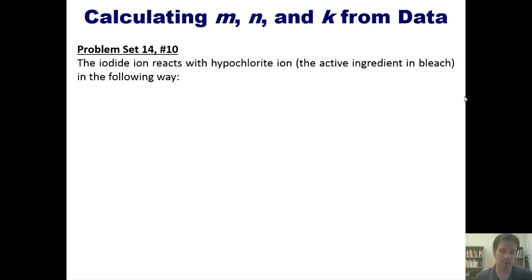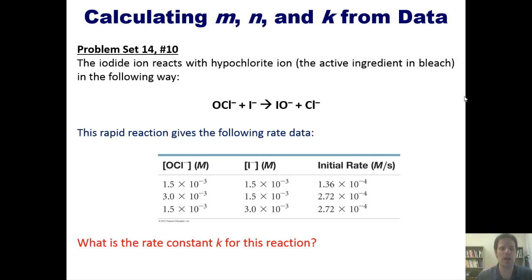That brings us to another great example. The iodide ion reacts with hypochlorite ion, the active ingredient in bleach, just so you know, in the following way. This rapid reaction gives the following rate data. What is the rate constant, K, for this reaction? Now, once again, having done the example that we just did earlier, you're welcome to pause the video and attempt this on your own. You can then click this link to watch me solve it on the whiteboard.